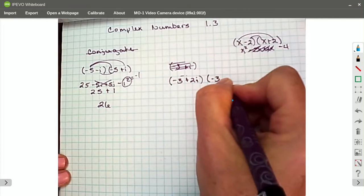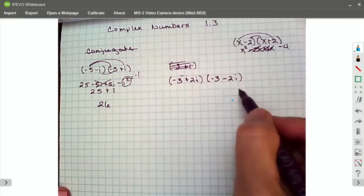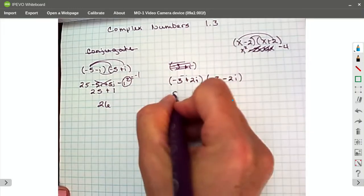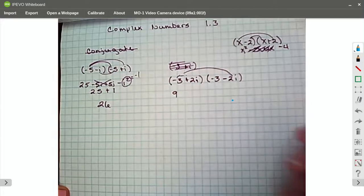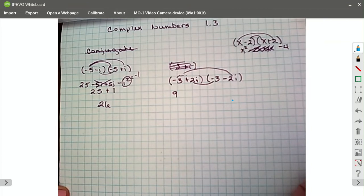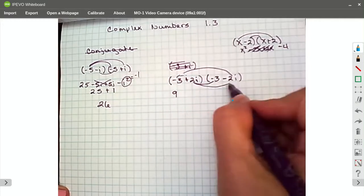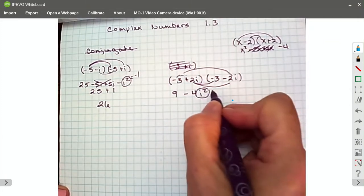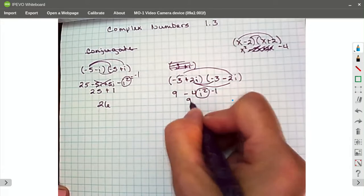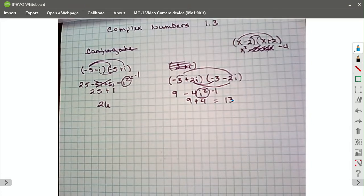So I have negative 3 minus 2i. Only one sign gets changed. So negative 3 times negative 3, there's my square out front. I have a positive 6i and a negative 6i, they've canceled each other out. That's by design. That's why we're using this whole conjugate thing. And then on my last, I have a negative 4i squared. So what is that i squared? That's my negative 1. So I have 9 plus 4 gives me 13. And that's going to work out that way every time.